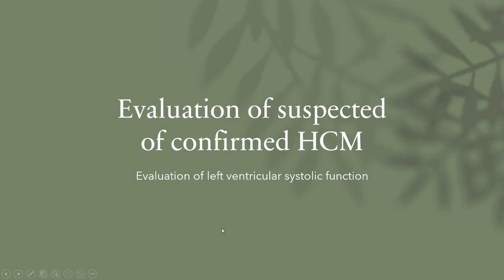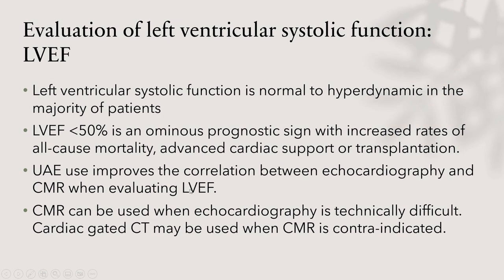Comparing athlete's heart and HCM: LVH will be symmetric in athlete's heart and asymmetric in HCM; LV size is increased in athlete's heart; LVOT obstruction is absent in athlete's heart; diastolic function is reduced in HCM but not in athlete's heart; functional capacity is normal or low in HCM versus athlete's heart. Detraining may improve LVH in athlete's heart. LGE is infrequent in athlete's heart but may rarely occur at the RV insertion point.